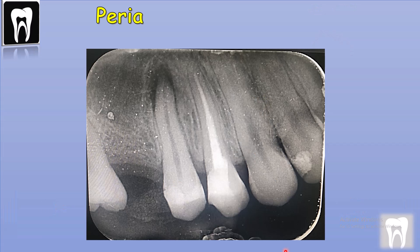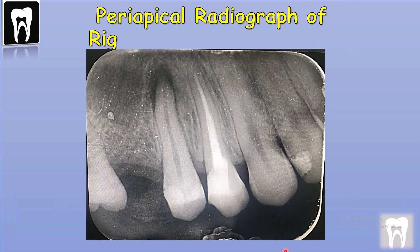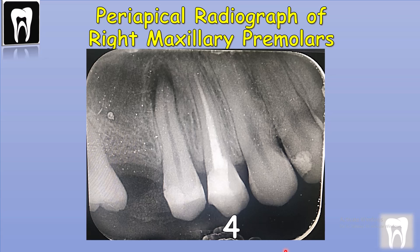This is a periapical radiograph of the maxillary premolars. We can see the maxillary premolars, the crown, the root, and the lamina dura and the periodontal space, and the surrounding bone.